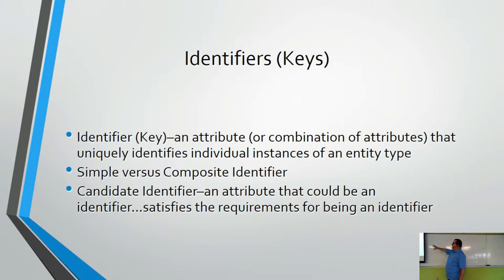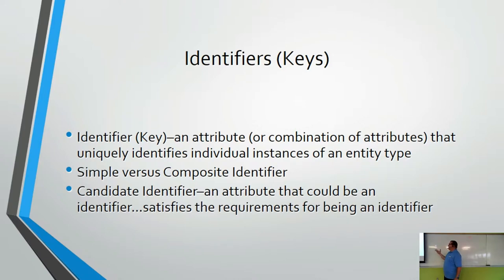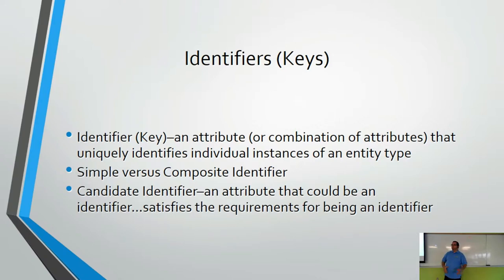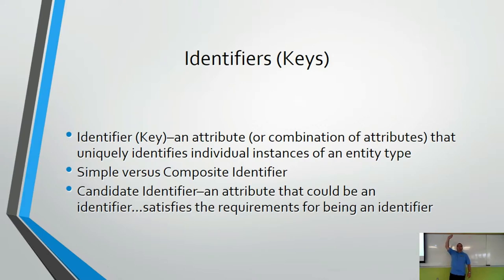Identifiers — also known as keys — are an attribute or combination of attributes that uniquely identifies individual instances of an entity type. Simplified: which attribute lets you find a particular instance? For example, your student number uniquely identifies you in this room. That's your identifier.